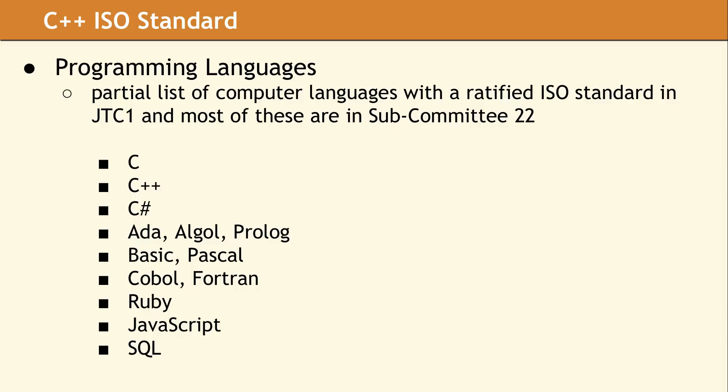This list contains some of the more widely known computer languages which have an ISO-approved standard. Most of these standards are produced by SC22, while the SQL standard is maintained in SC32. Several common languages like Java, Go, Rust, Python, Perl, PHP, D, and Objective-C do not have a published ISO standard.